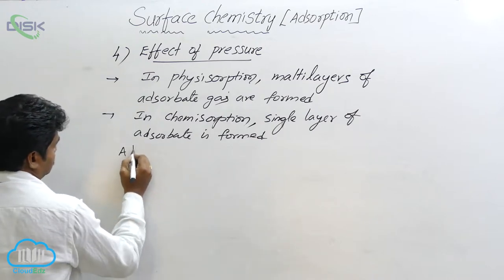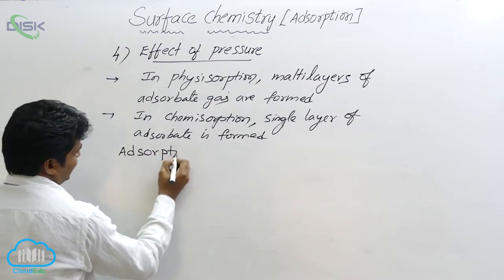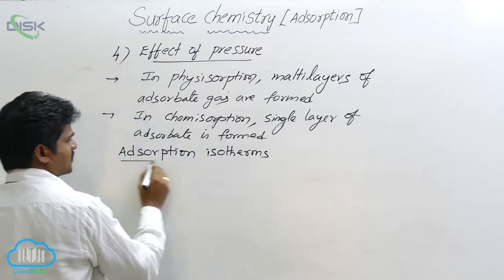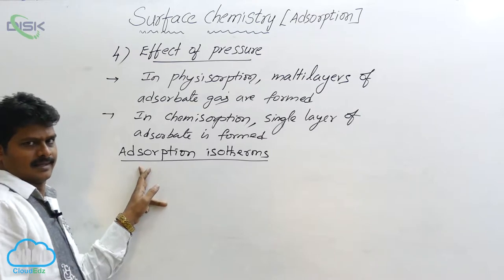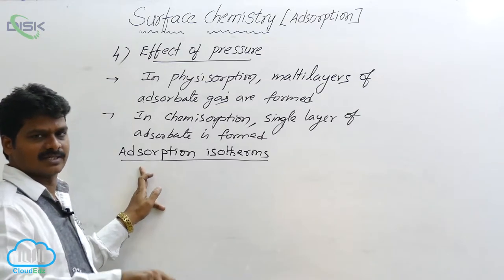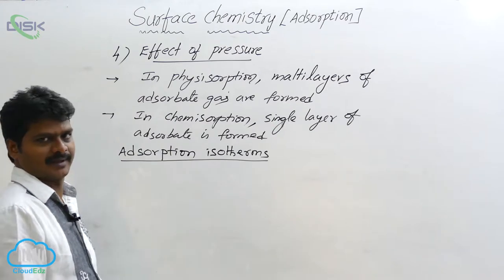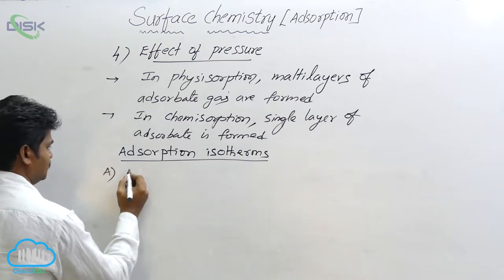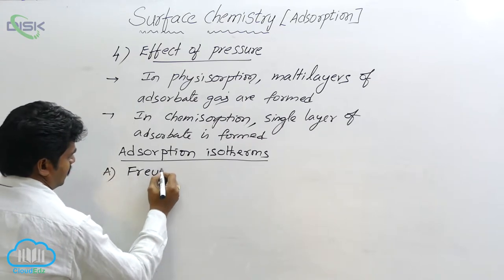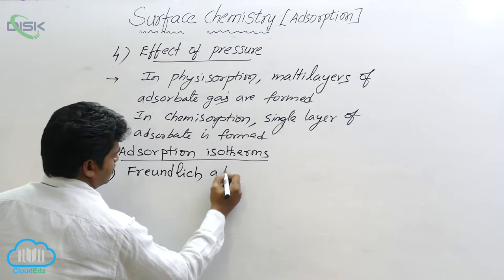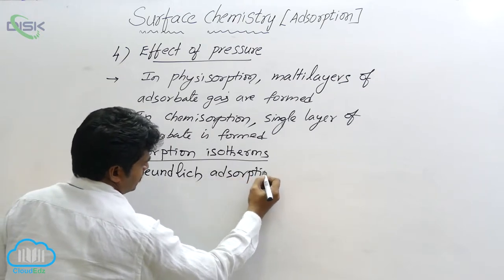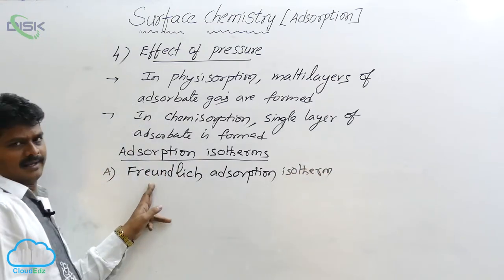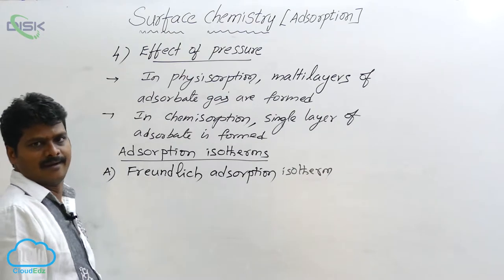To explain the effect of pressure in the adsorption process, there are two adsorption isotherms — these are theories that explain the effect of adsorption at constant temperature. The first one is the Freundlich adsorption isotherm.